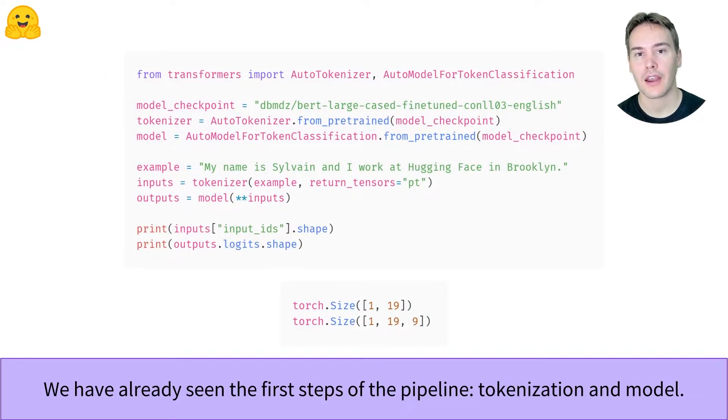The first two steps are identical to the text classification pipeline, except we use an auto token classification model instead of a sequence classification one. We tokenize our text then feed it to the model. Instead of getting one number for each possible label for the whole sentence, we get one number for each of the possible nine labels for every token in the sentence, here 19.